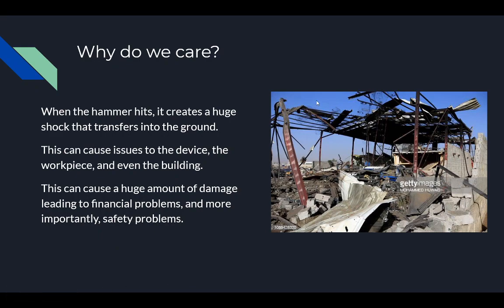So why would we care about this? Why does this interest us as mechanical engineers? As the hammer hits, it creates a huge shock, which transfers into the ground. This shock can cause a large amount of damage to the workpiece, the device itself, and even the building. That's why those parts failed early on. Nothing was blocking that shock from happening. It would go into the ground and destroy itself over time. This can cause a large amount of problems, financial and safety. Your factory could end up looking like this.